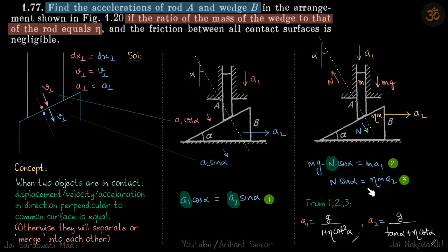This gives us only two equations while our variables are n, a1 and a2. So we need one more equation and that we will get by relating a1 and a2 because their surface is common. So here the constraint relation between the rod and the wedge we will figure out to find the relation between a1 and a2.